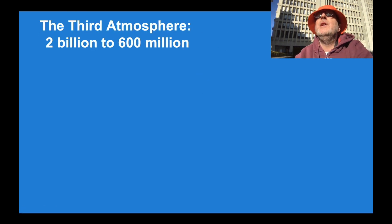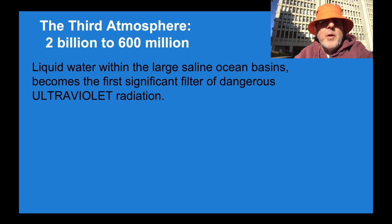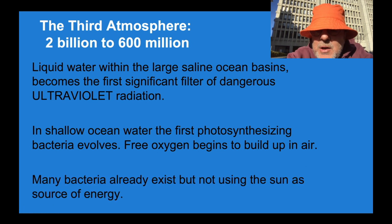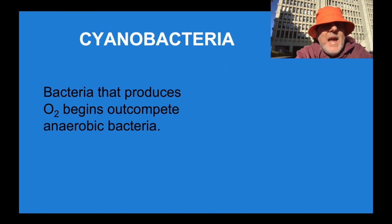So now we need the third atmosphere to get that, 2 billion to 600 million years ago. Liquid water within the large saline ocean basins becomes the first significant filter of dangerous ultraviolet radiation. In shallow ocean water, the first photosynthesizing bacteria evolves. Free oxygen begins to build up in the ocean and air. Many bacteria already exist, but not using the sun. They are not using the sun as a source of energy. But cyanobacteria are. These are bacteria that produce O2 and they begin to outcompete anaerobic bacteria.